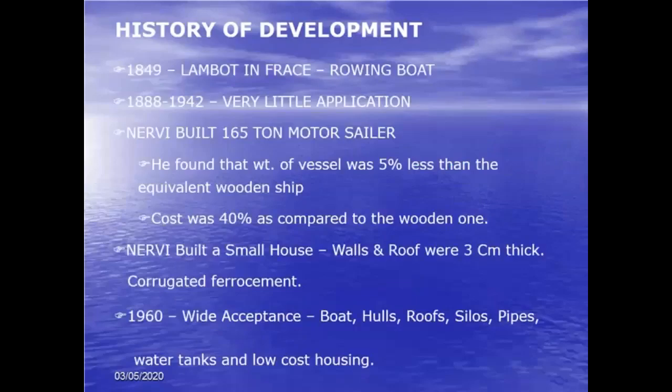The history of ferrocement goes back to 1849 when Lambot in France fabricated a rowing boat. There was very little application until Nervi, who was responsible for further development. He built a 16,810 motor sailor that was found to be about 5% less than the equivalent potential and cost 40% less than a wooden equivalent. Nervi also built a warehouse where walls and roof were only three centimeters thick using corrugated ferrocement — corrugations being necessary to improve the moment of inertia ratio given the only 25 mm thickness.